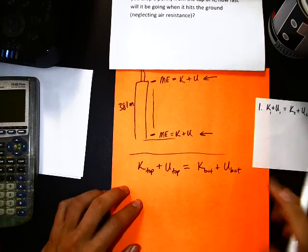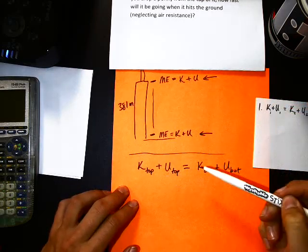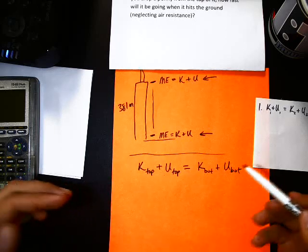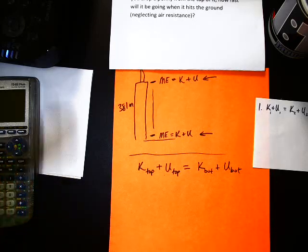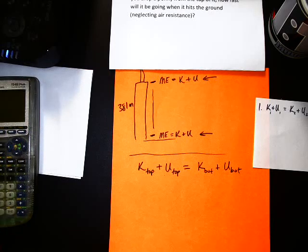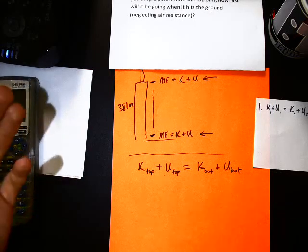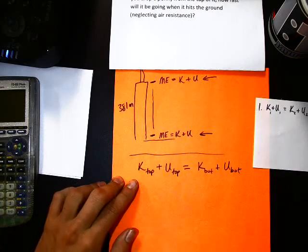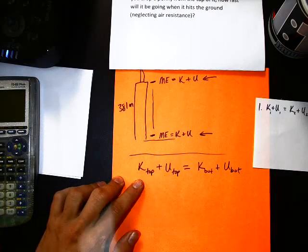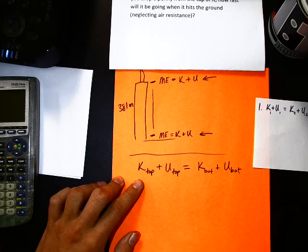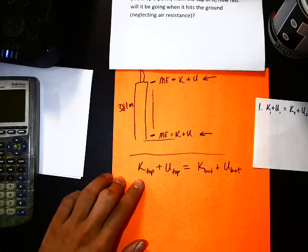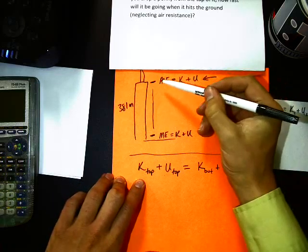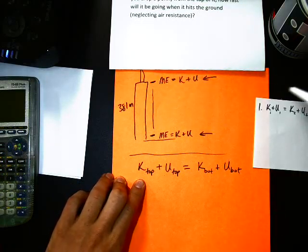And for all of these conservation of energy problems, this is really your first step. I'm actually going to write that on this little square paper, so we can use it for the next problem. So step one is understanding that mechanical energy is conserved. So K plus U, 1 and 1 equals K2 plus U2. So step one, I'll set that aside.